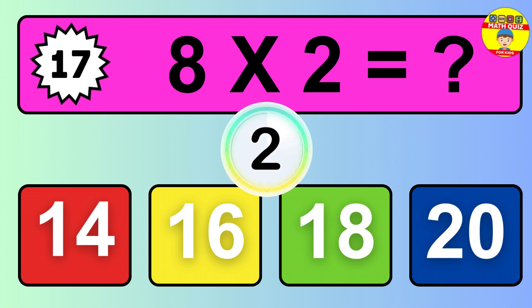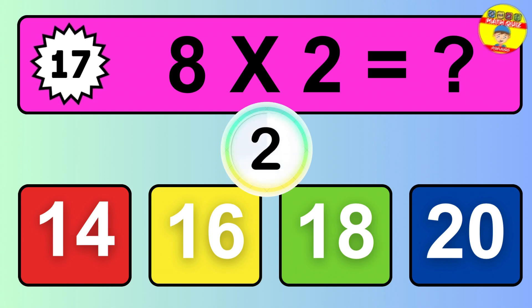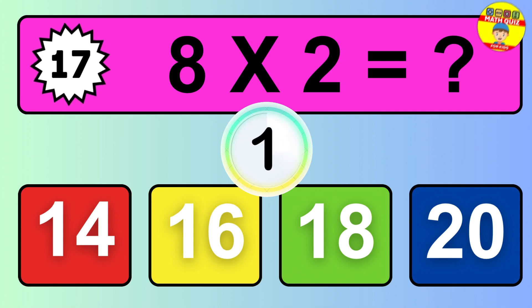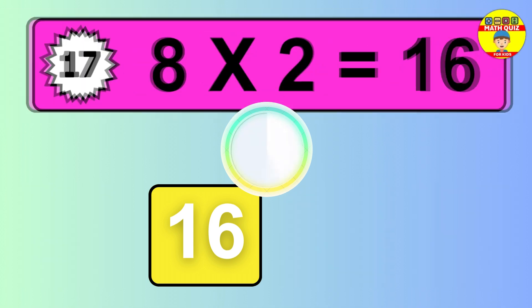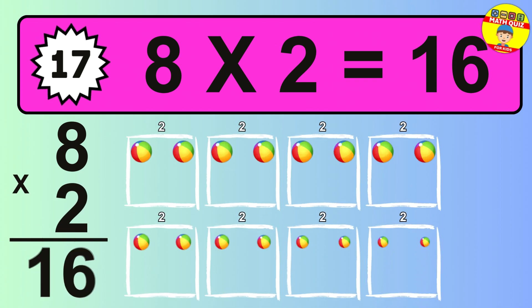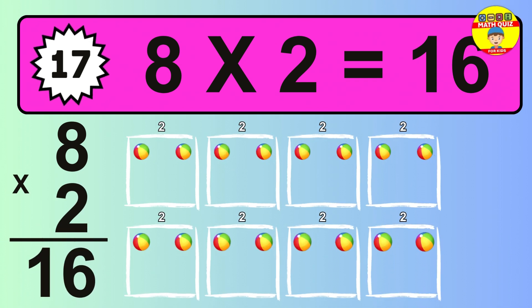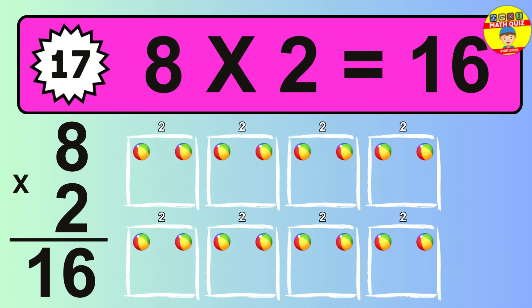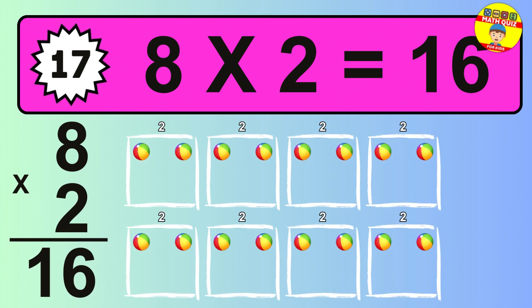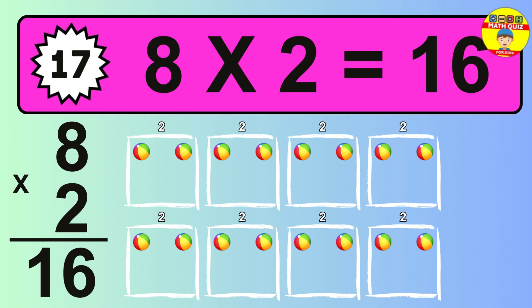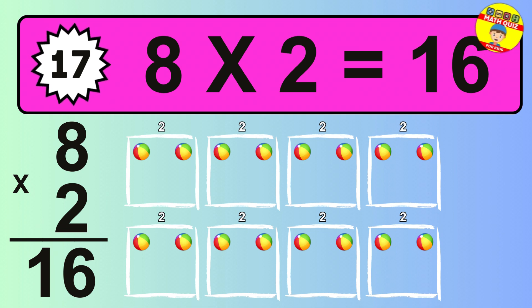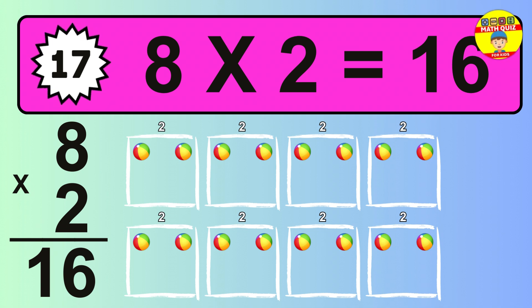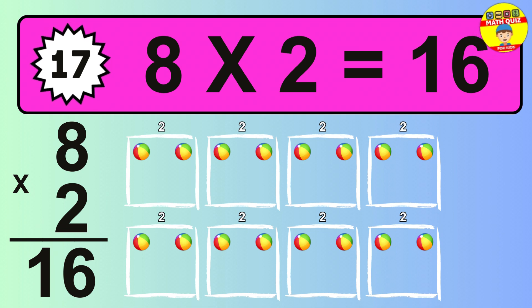Question 17. Eight times two equals what? The answer is eight times two is sixteen. To calculate, we have eight groups with two balls each one. So how many balls do we have? Sixteen balls.